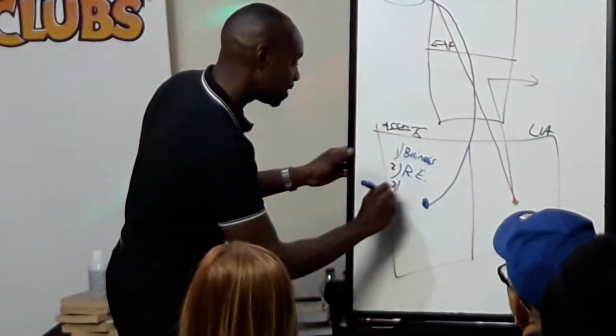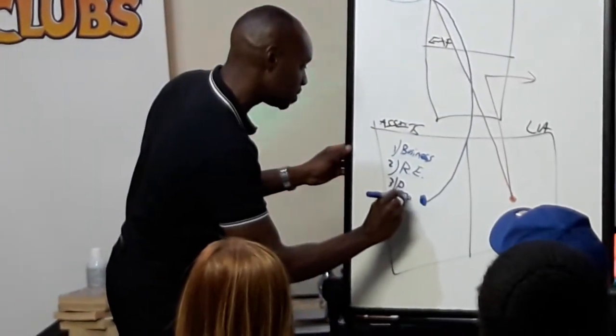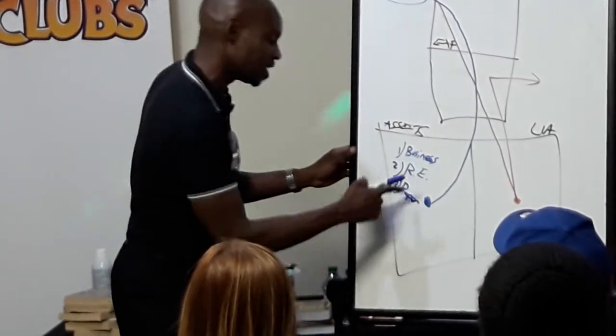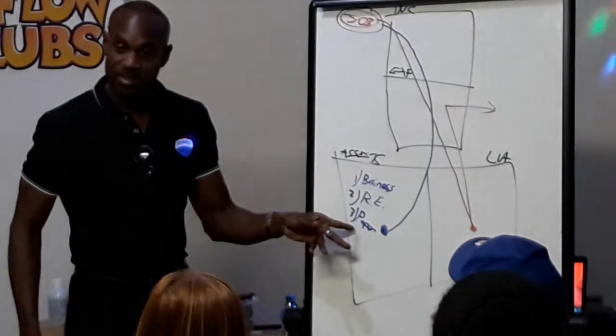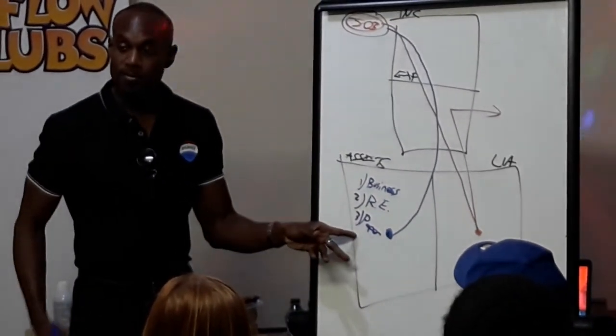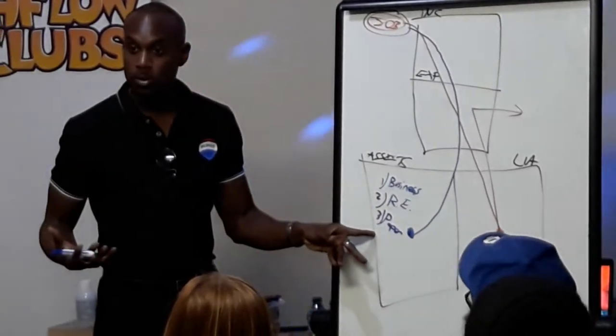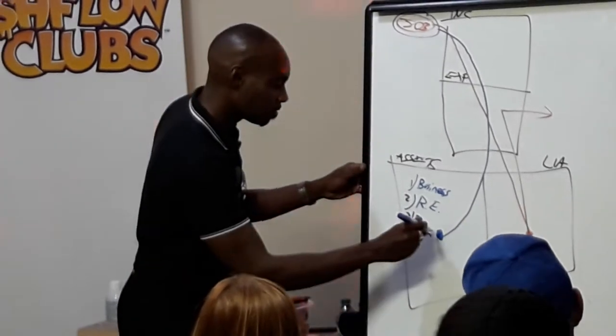The third asset class is paper assets. This is where the stocks, bonds, mutual funds, CDs, and hedge funds are. This is the riskiest of all asset classes, because you have no control over paper assets.